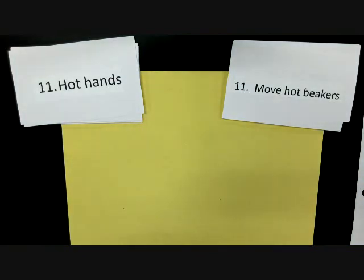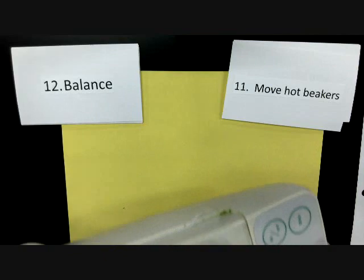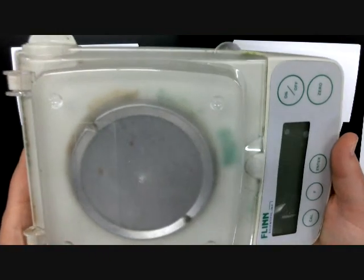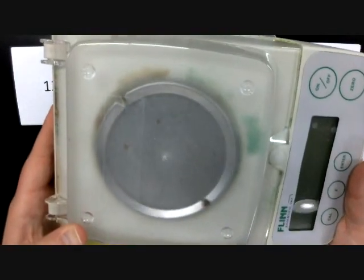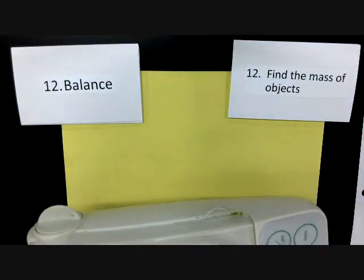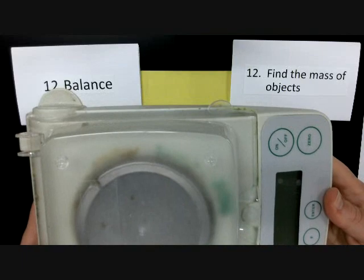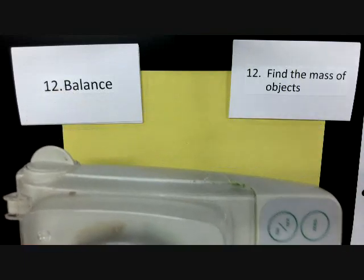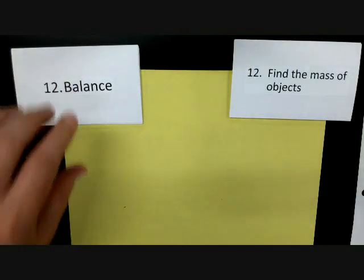Now we're down to the third row. Some people call this next one a scale, but in chemistry class we call it a balance. You've probably used triple beam balances in elementary school, but we don't have time for that so we use electronic balances in chemistry class. The whole point is to find the mass of an object, not the weight. We plug these in, learn how to use them, and whenever I say in the lab to find the mass, you just go to the balance and read what it says.